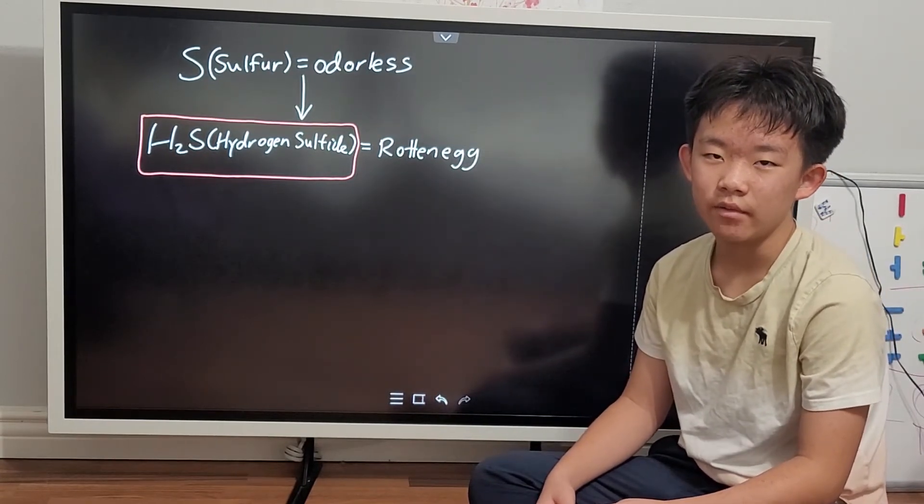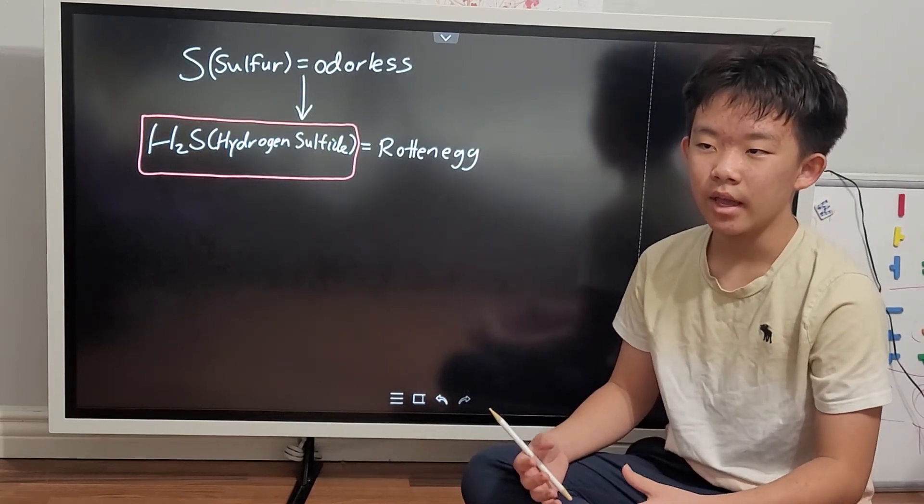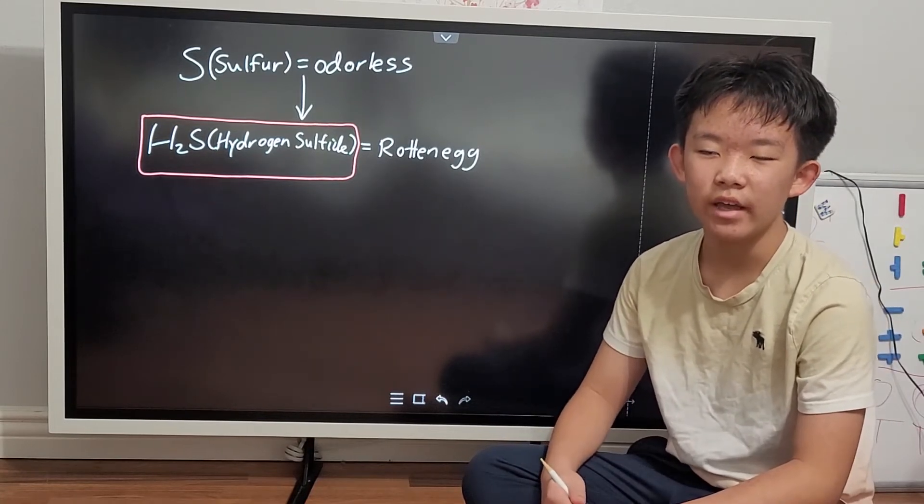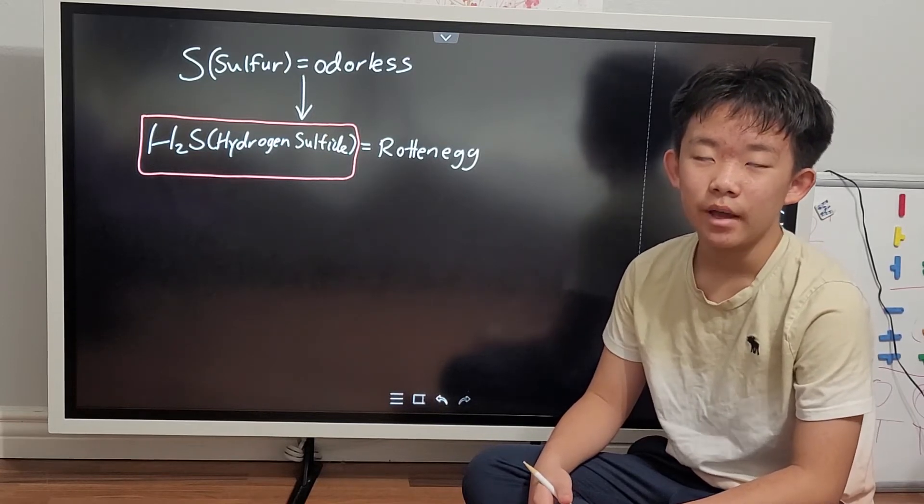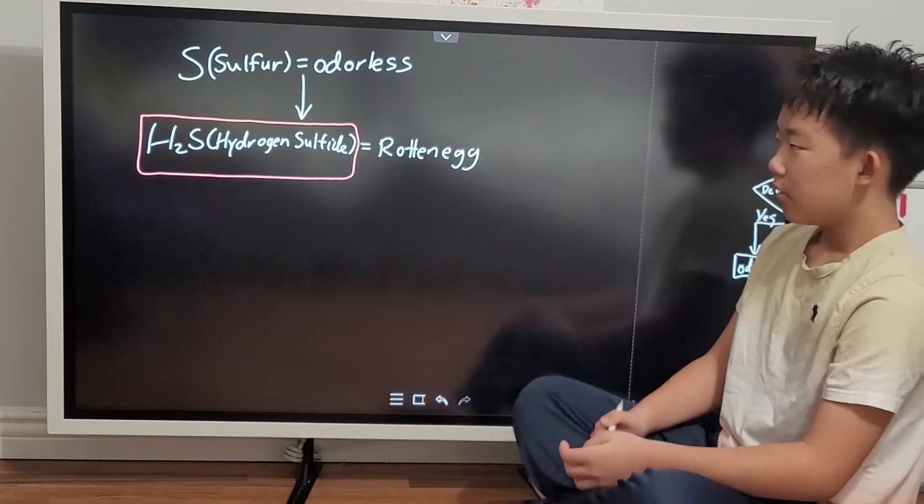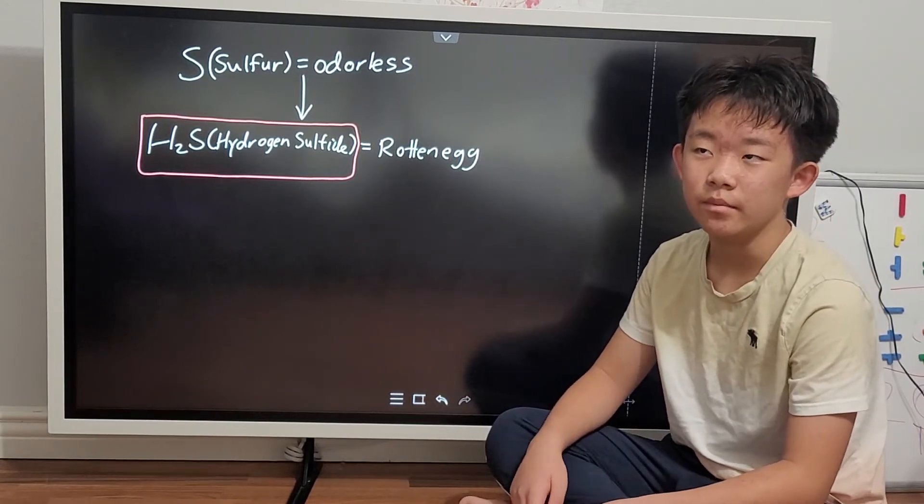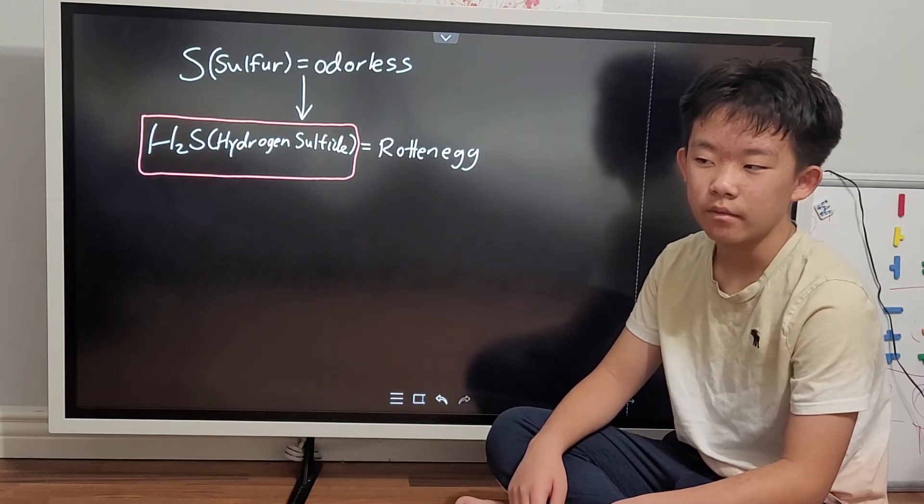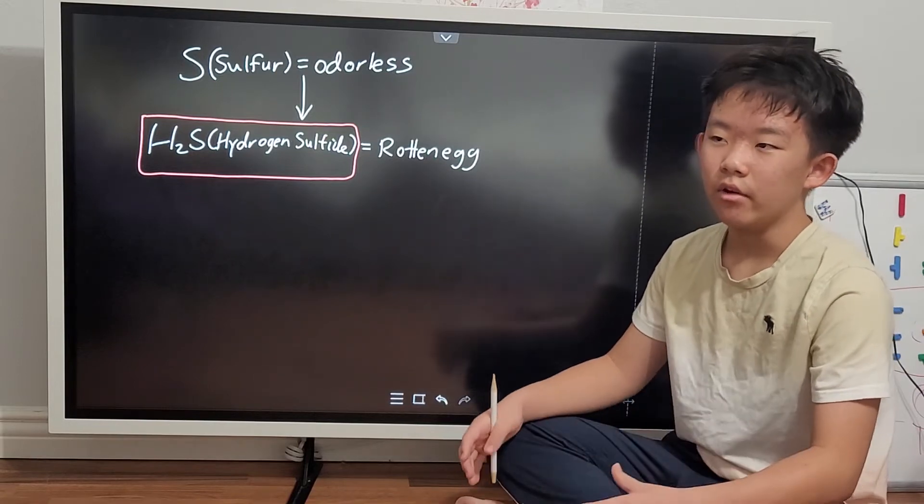Now before we look at our reactions, let's see why sulfur doesn't have an odor. The real culprit of the smell of sulfur is a gas known as hydrogen sulfide with a chemical formula H2S. H2S is a very toxic, bad-smelling, and colorless gas. It is the one that is responsible for all those rotten eggs that sulfur gets blamed for, and is formed when hydrogen and sulfur react together.